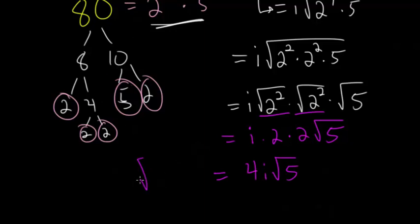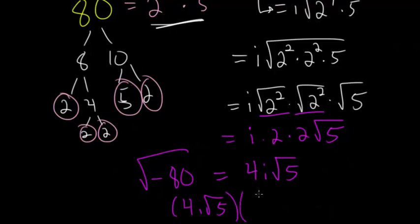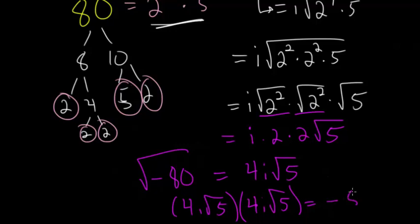So the square root of minus 80 is 4i times the square root of 5. To verify, multiply 4i√5 times 4i√5: the i squareds combine to give the negative, root 5 times root 5 is 5, times 4 is 20, times 4 again gives us minus 80. So that is the correct answer.